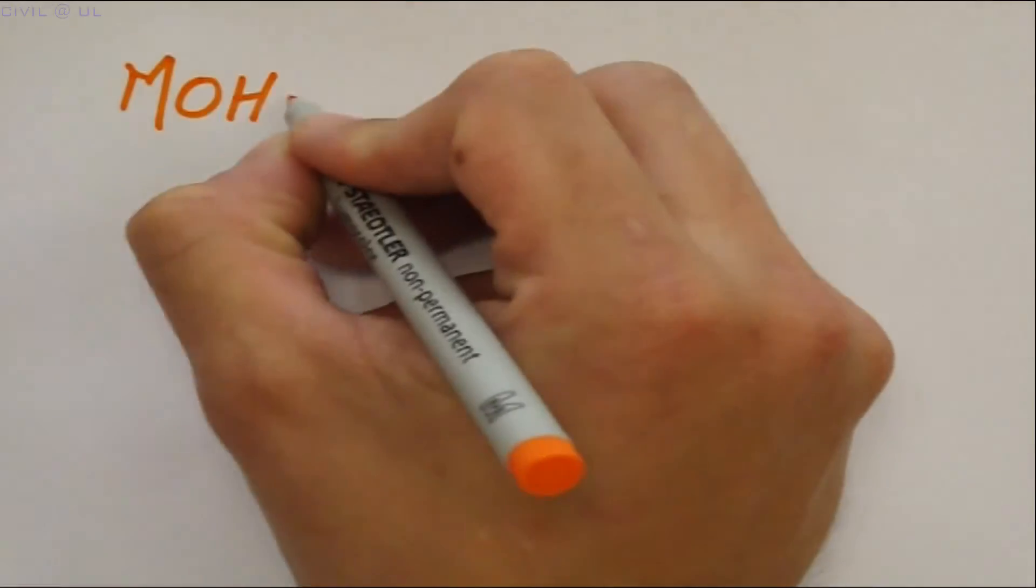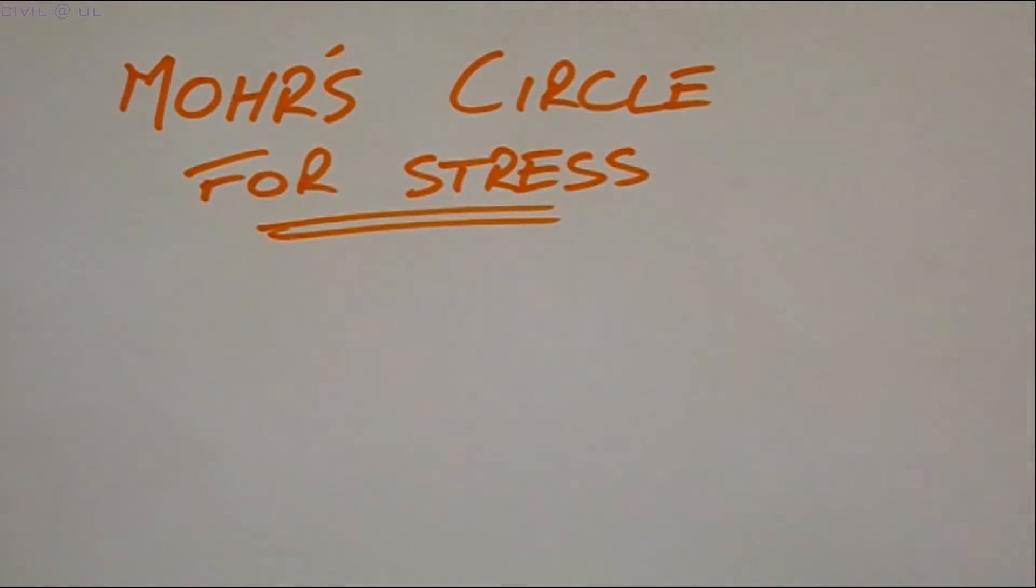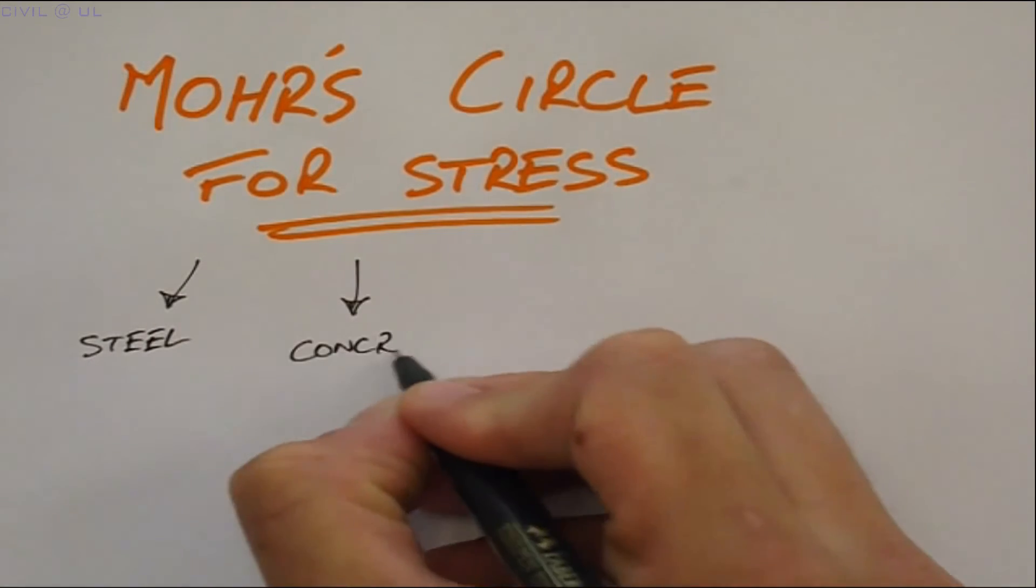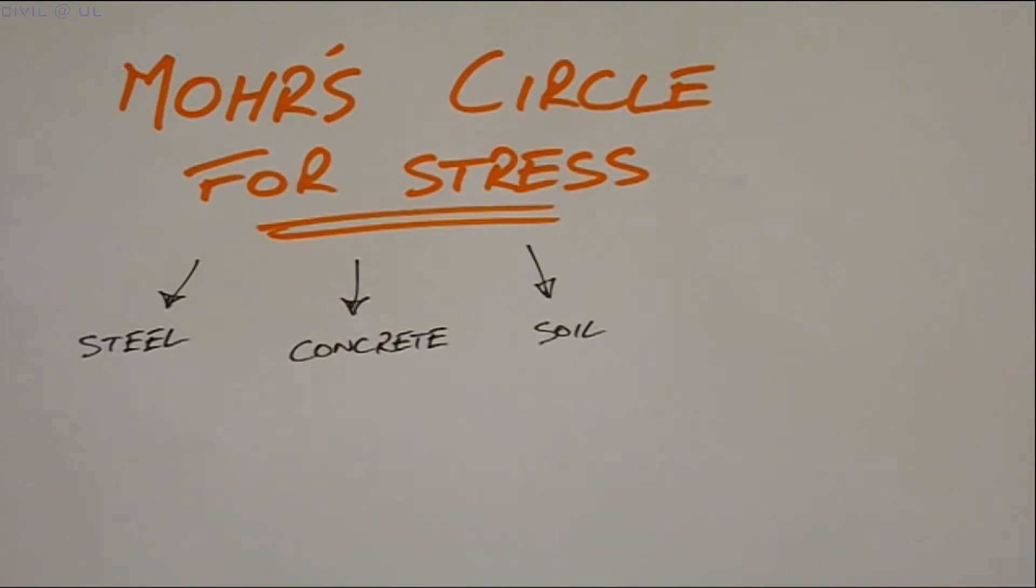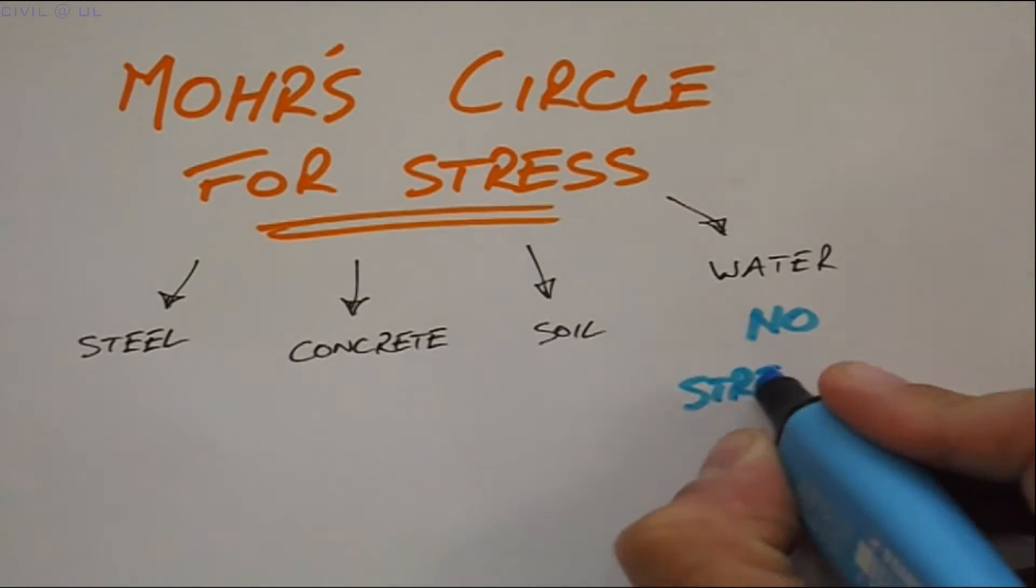I'll start by drawing from your prior knowledge on Mohr's circle for stress. Let's examine the strength of steel, concrete and soil. And while we're at it, we'll also show why static water has no strength.